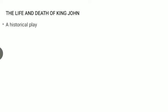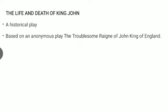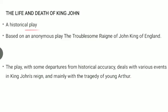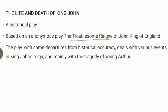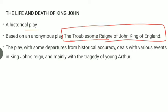In this lesson, first we will be talking about the Life and Death of King John. This is a historical play — in the series of historical plays by Shakespeare. This is based on an anonymous play, The Troublesome Reign of King John of England. Like most works by Shakespeare, it was influenced by — or you can say copied from — other writers.